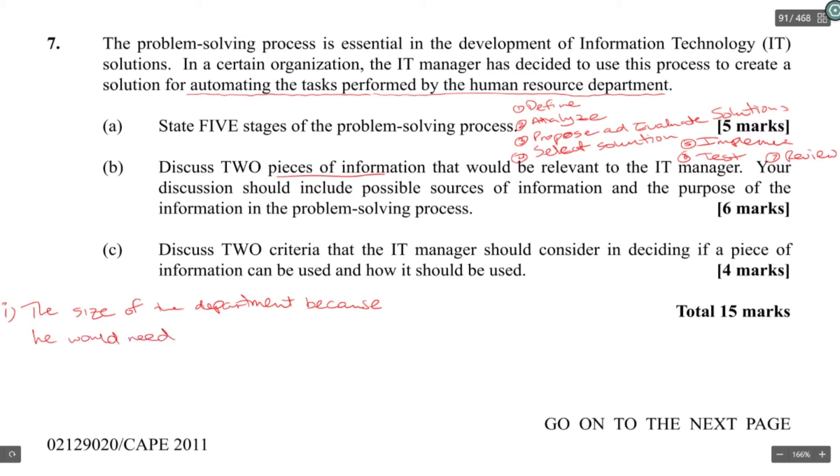Example like hiring, filing, contacting. Those are things that a human resource department would do, so it can be sourced from the HR files. They also want to say where you would source it, right? The discussion should include possible sources of information.